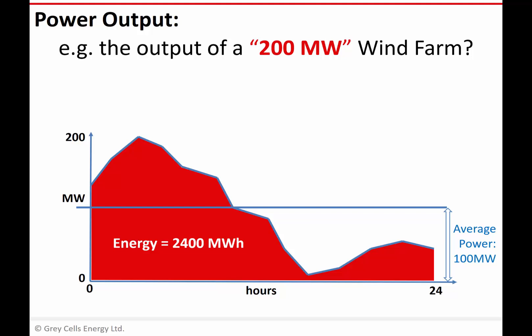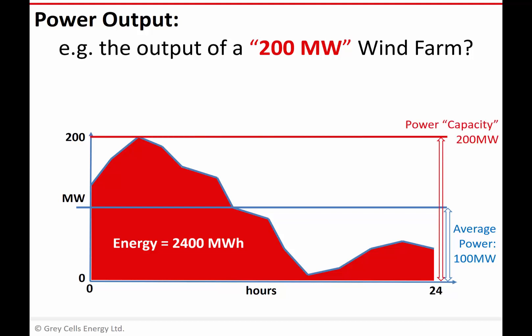That brings us to what we mean when we talk about a 200 megawatt wind farm, because clearly this wind farm is only producing an output of 200 megawatts at one instant in time over the course of the day — most of the time it's operating below that. What we mean by a 200 megawatt wind farm is that it has a capacity of 200 megawatts — that is, the maximum rate at which it could generate energy. You'll hear various terms: power capacity, rated capacity, installed capacity — all referring to this maximum potential power output.